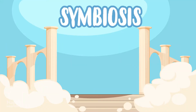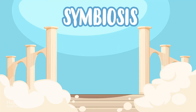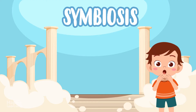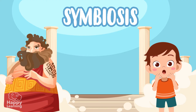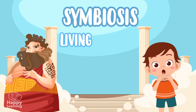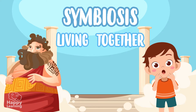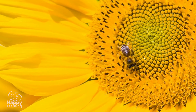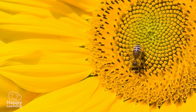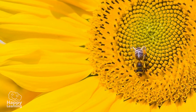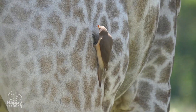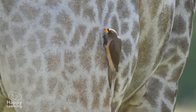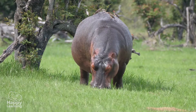Symbiosis — what a strange word! Have you ever heard of it? It comes from a Greek word which means 'living together,' and that's exactly what happens in symbiosis: two completely different species which have nothing to do with each other unite and live together very closely.